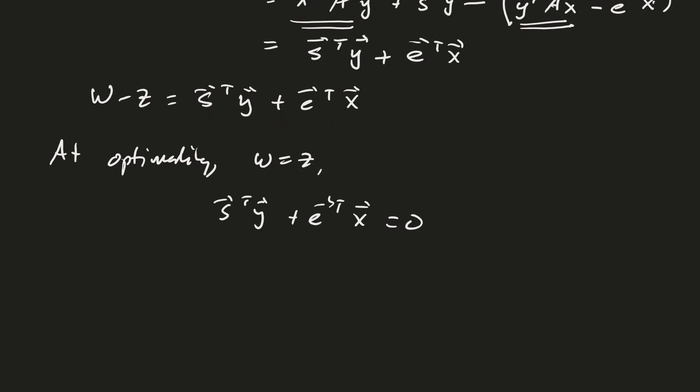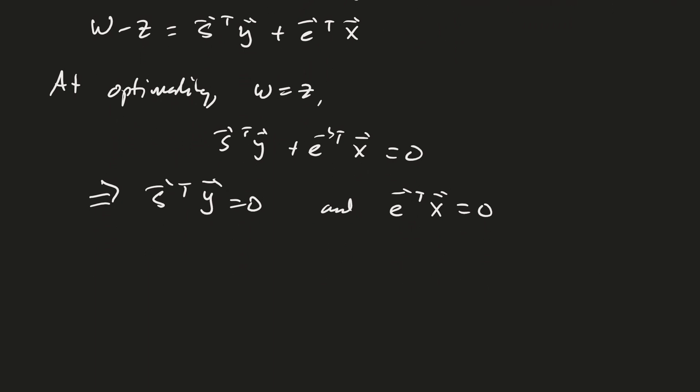Now from this, I want to be able to say that this implies s transpose y equals 0 and e transpose x equals 0. Now in general, I can't say that. Why can I say that in this case? That's because s is greater than or equal to 0, y is greater than or equal to 0, e is greater than or equal to 0, and x is greater than or equal to 0.